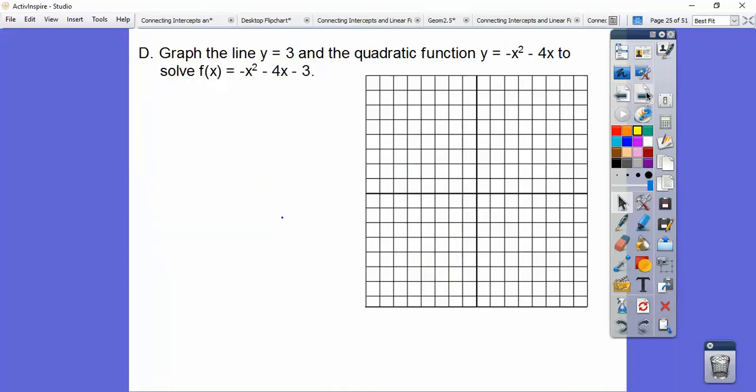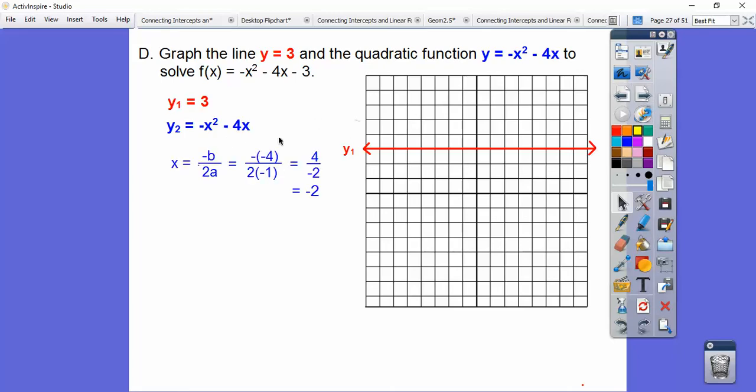So let's graph the line y equals 3 and the quadratic function, this guy right here, to solve this. So we did this about a week ago. When we set this equal to 0, we added 3 to both sides, and so that's what they're doing. Instead of graphing this and finding out where it intersects 0, another way was to add 3 to both sides, and you get y equals 3, so that's a horizontal line right there. We'll graph this guy in blue. So x equals opposite b over 2a, so opposite b is negative negative 4, which is a positive 4 over 2 times this a right here, so 2 times negative 1 is negative 2, so we get negative 2 right there.